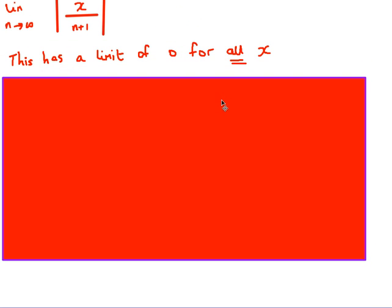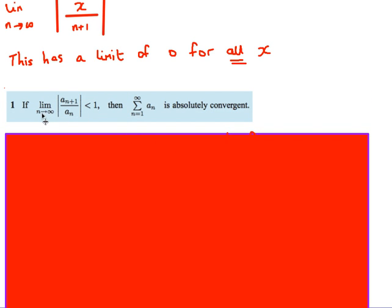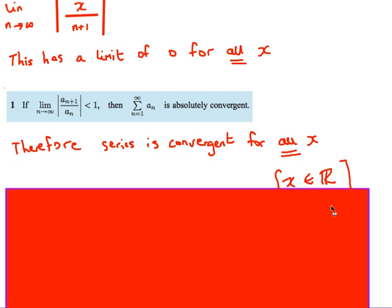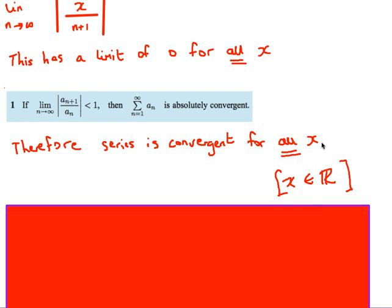It's looking easier now. As n approaches infinity, the denominator grows without bound, so for any value of x I choose, x over (n+1) will still approach 0. Therefore, the limit as n approaches infinity is going to be less than 1 for every single value of x. So the series is absolutely convergent and therefore convergent for all values of x — we can write x belongs to the real numbers.